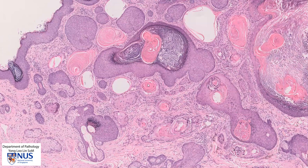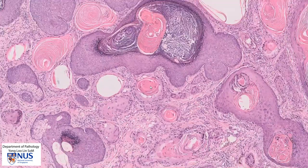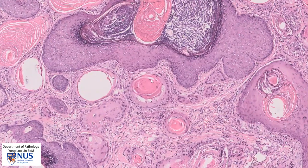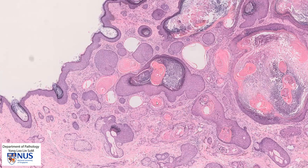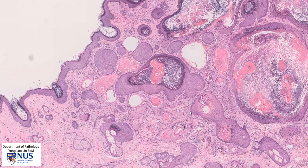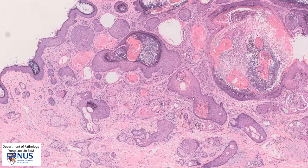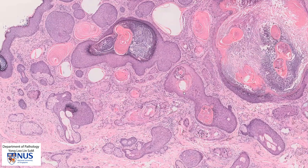You also notice that there are some areas where you see these whirls of densely orangophilic material — these are keratin pearls, and these are characteristically seen in keratinizing squamous cell carcinoma. In general, the more keratin pearls we see, the more well-differentiated the tumor is, but we also have to take into account the degree of nuclear atypia.